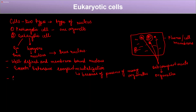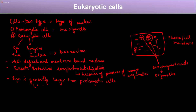If we talk about the size of a eukaryotic cell, it is generally larger than prokaryotic cells. The size range is generally 10 to 20 micrometers. Not all eukaryotic cells are of the same type — eukaryotic cells are of different types.